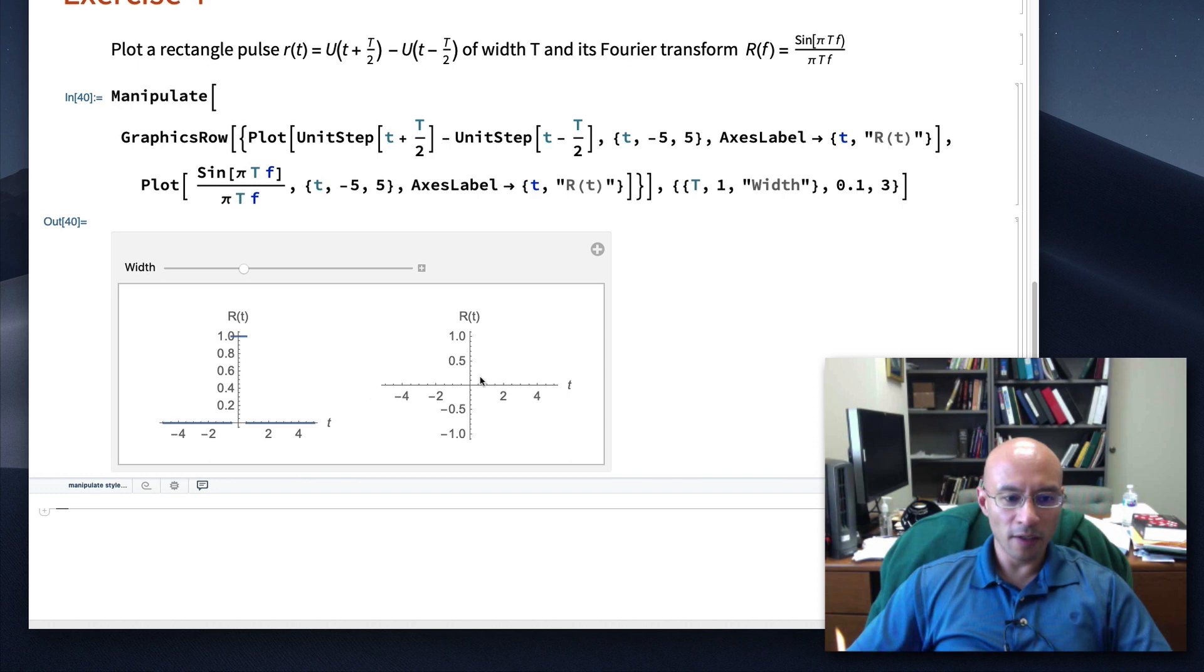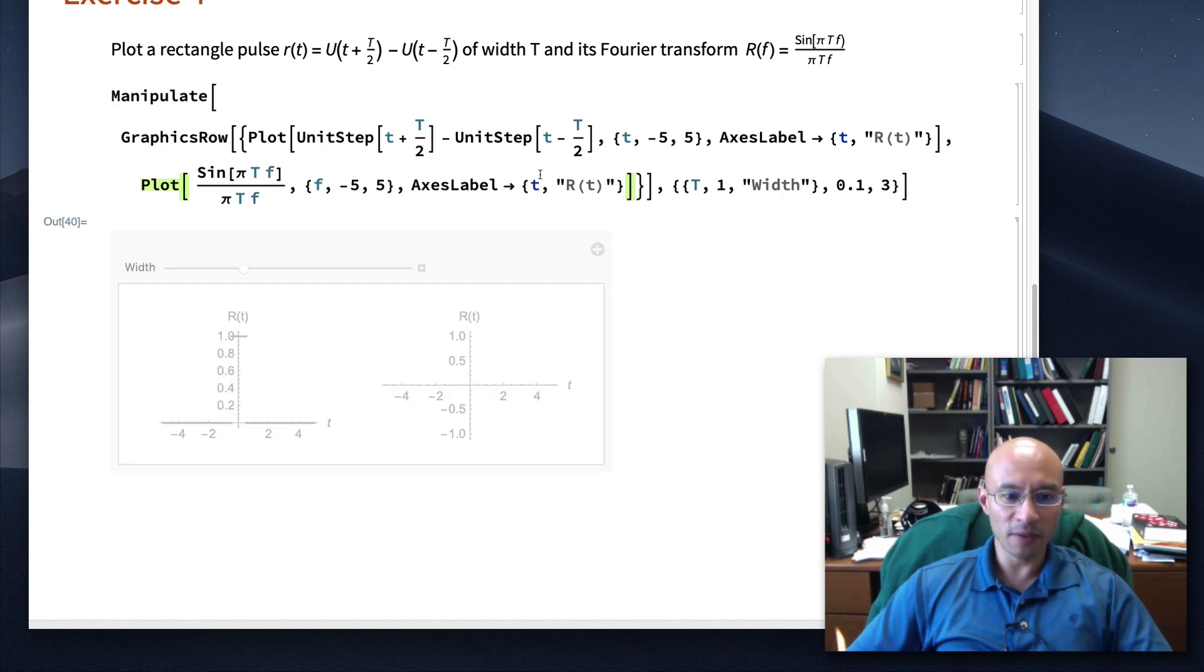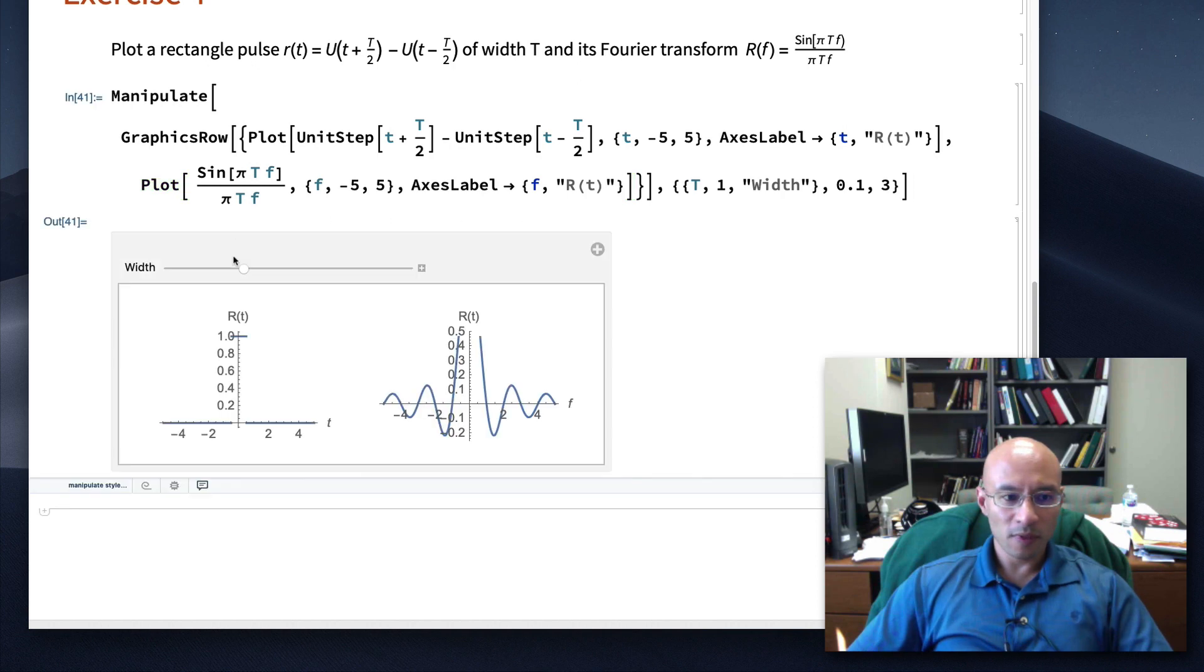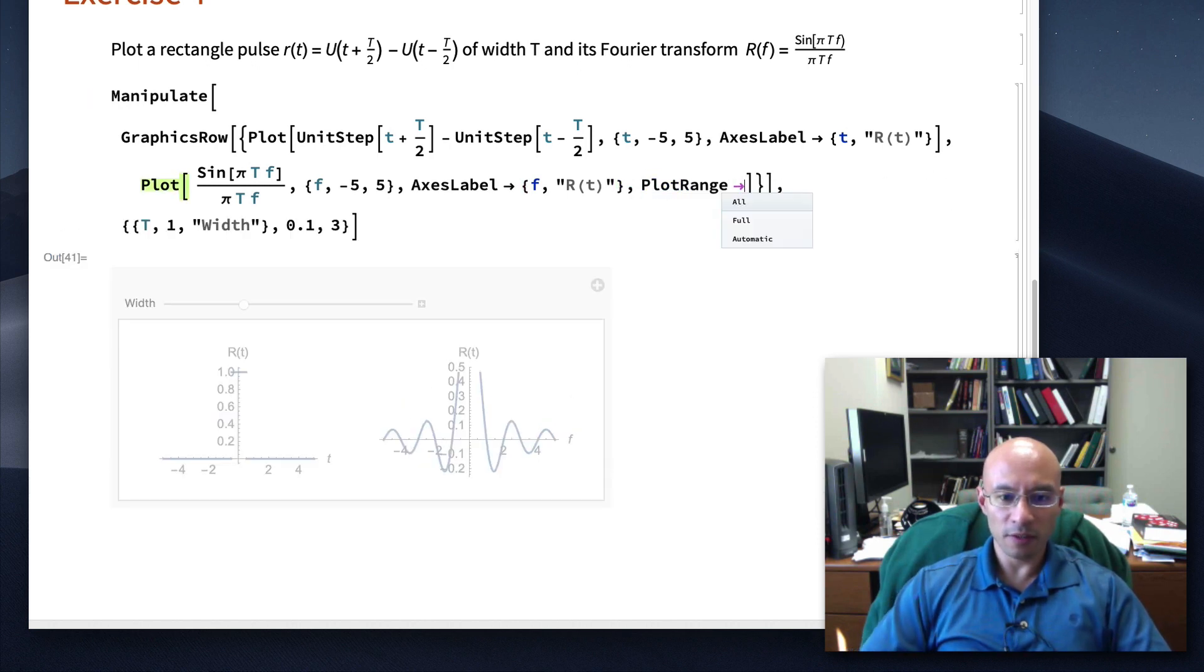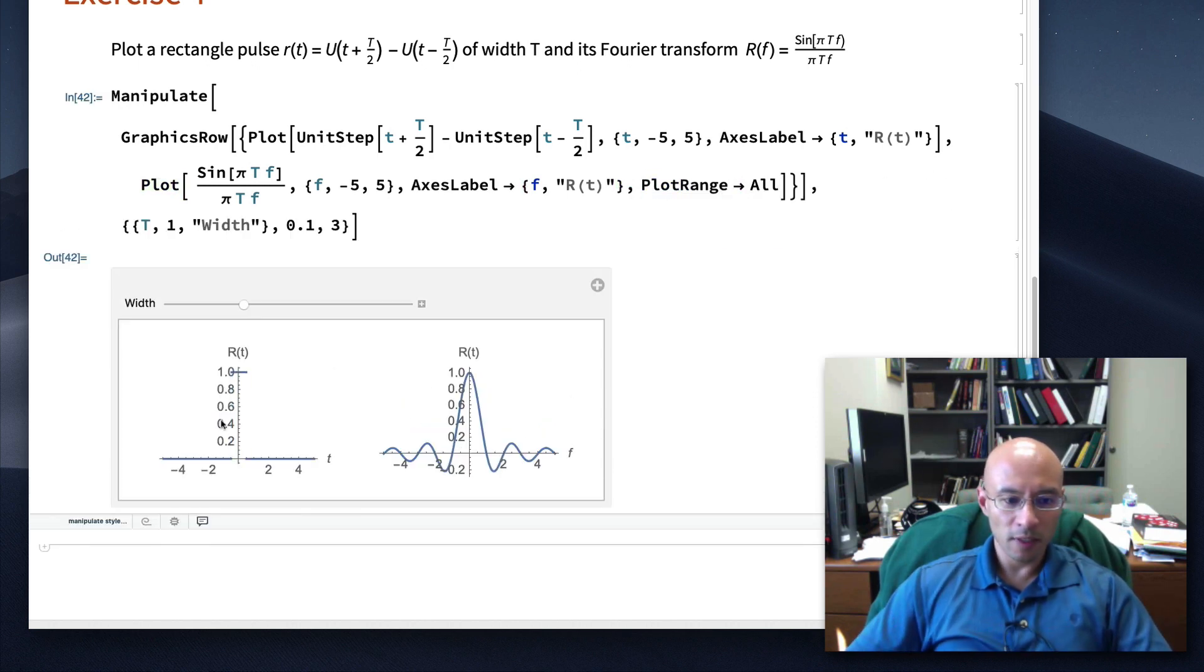The problem is that there's no T in this expression for the second plot, and Mathematica doesn't like that. So, there is, however, an F, so let's just change it to F. Let's see if that works. This is alright, but part of my graph is cut off. So, I'm going to put in my plot command here, plot range all. Okay, so now you can see as I change the width of the rectangle pulse, the width of the Fourier transform changes.